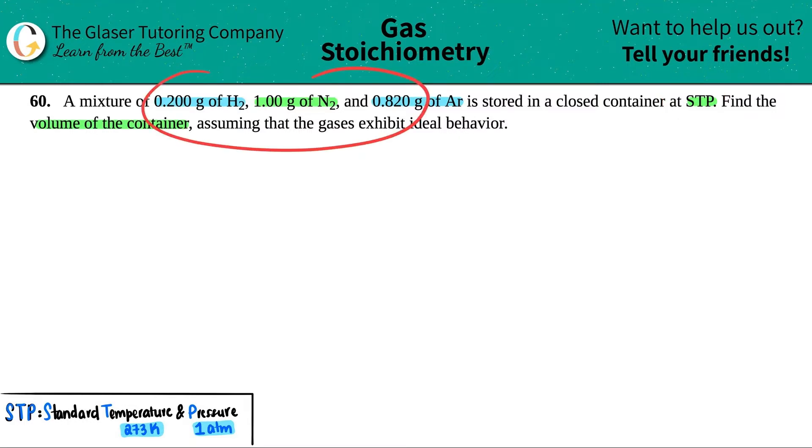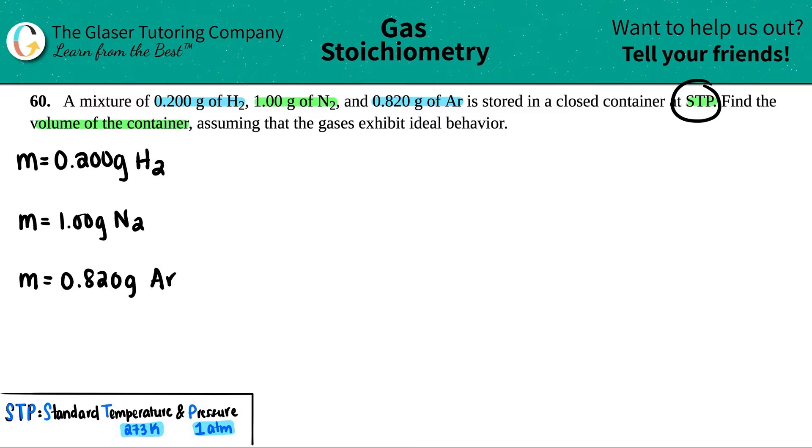Okay, so they gave us a couple of masses and told us STP. We're in the gas chapter, so the easiest way is to just list out everything you got and then pick a formula. Here they gave me a mass, so I'll say we have m = 0.200 grams of H2. We have another mass of 1.00 grams of N2, and then we have another mass of 0.820 grams of argon.